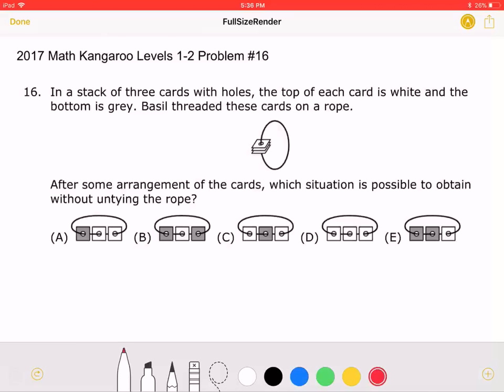This is the 2017 Math Kangaroo Levels 1-2, Problem No. 16. In a stack of three cards with holes, the top of each card is white and the bottom is gray. Basil threaded these cards on a rope. After some arrangement of the cards, which situation is possible to obtain without untying the rope?